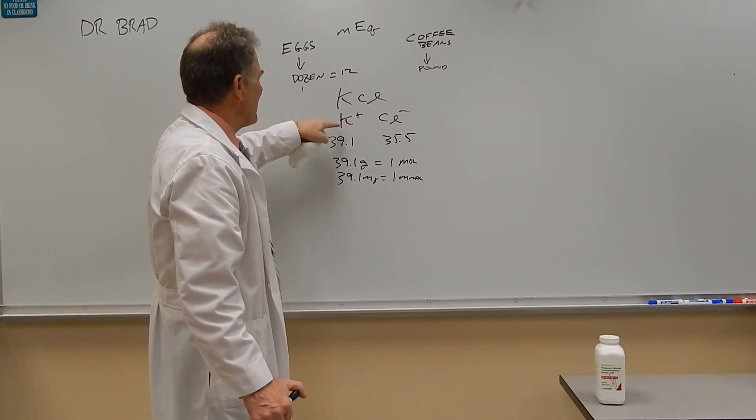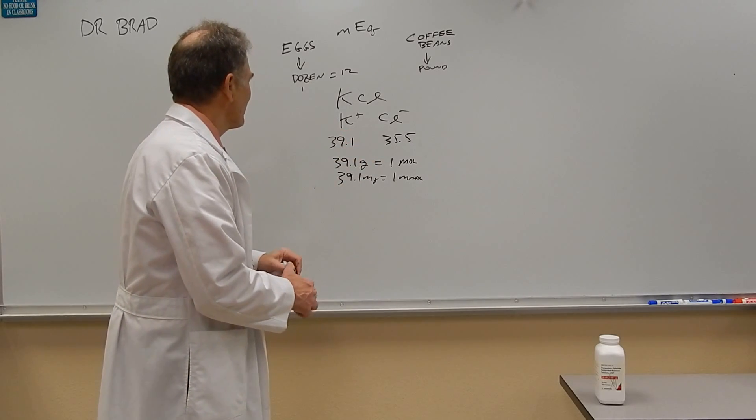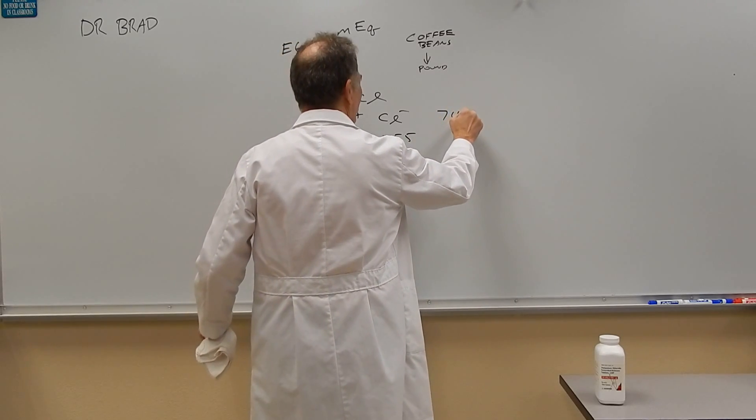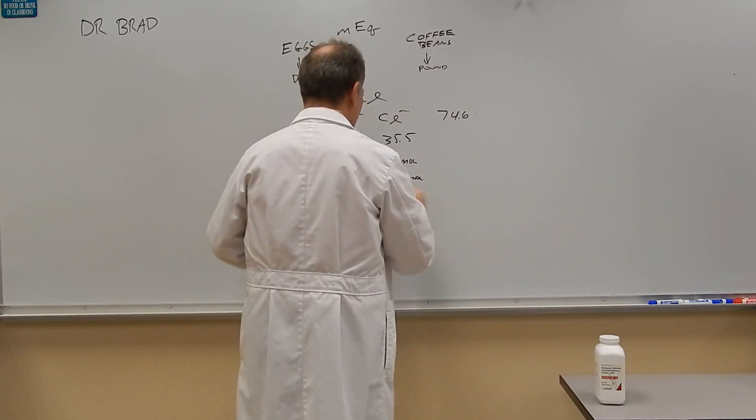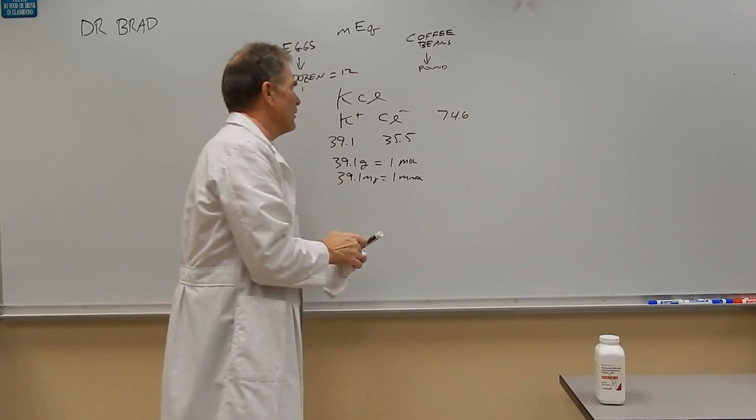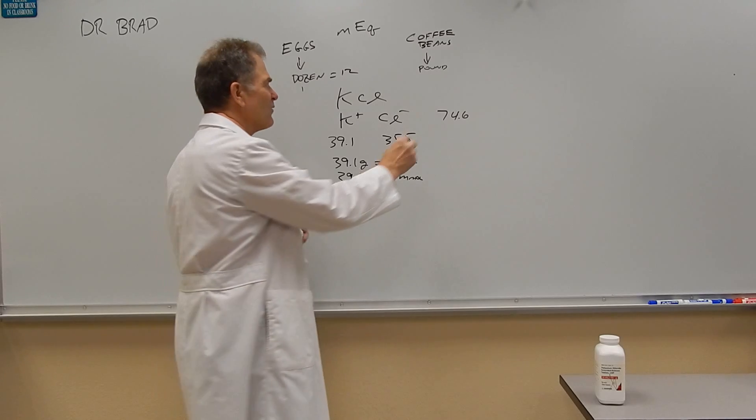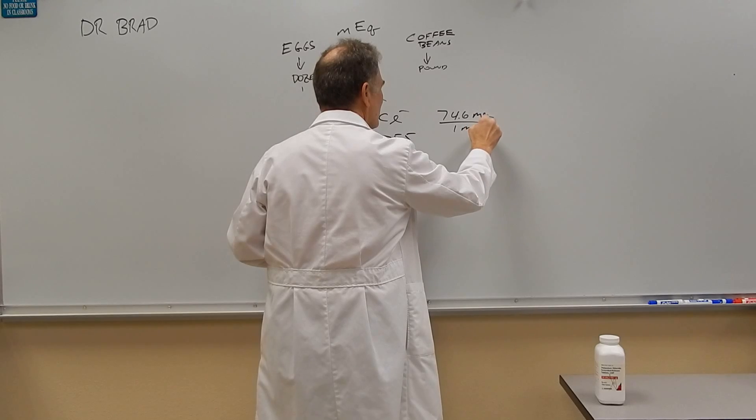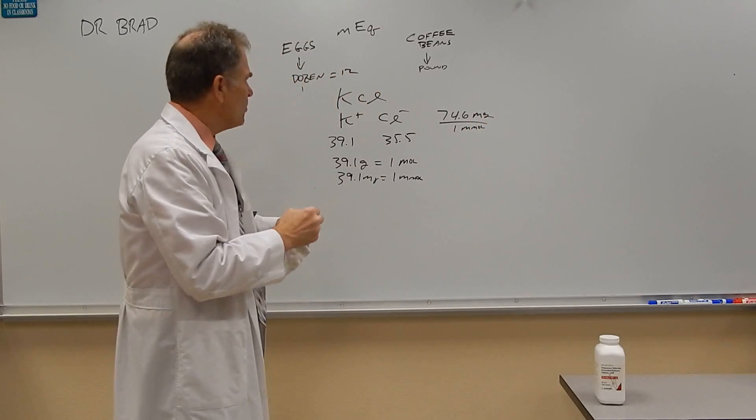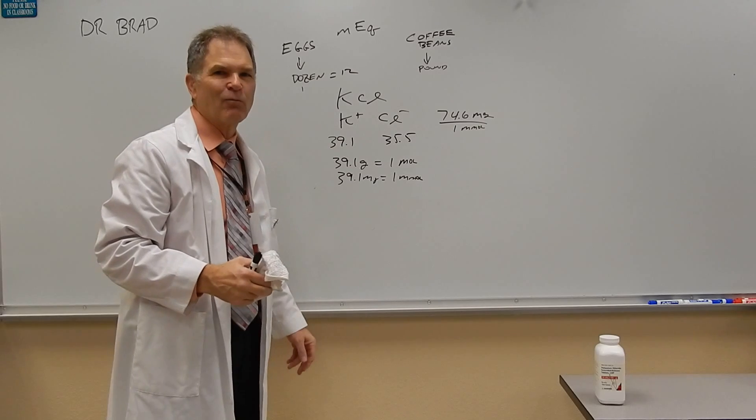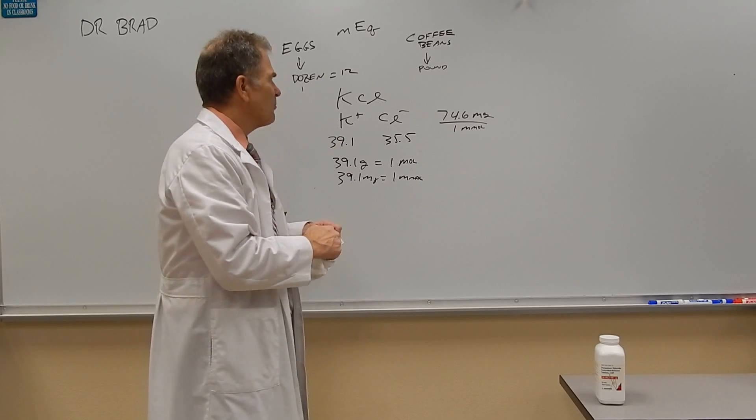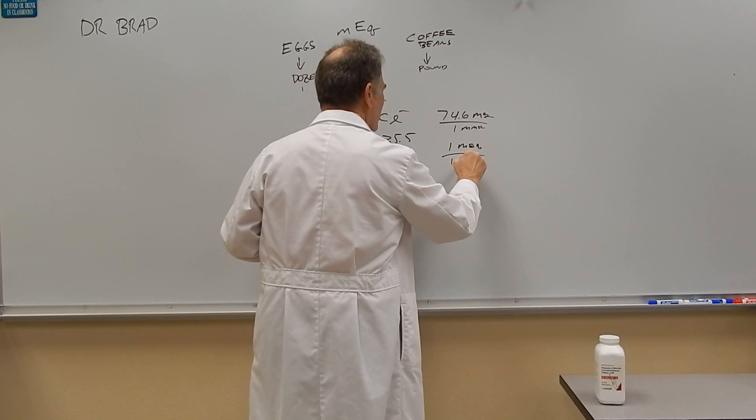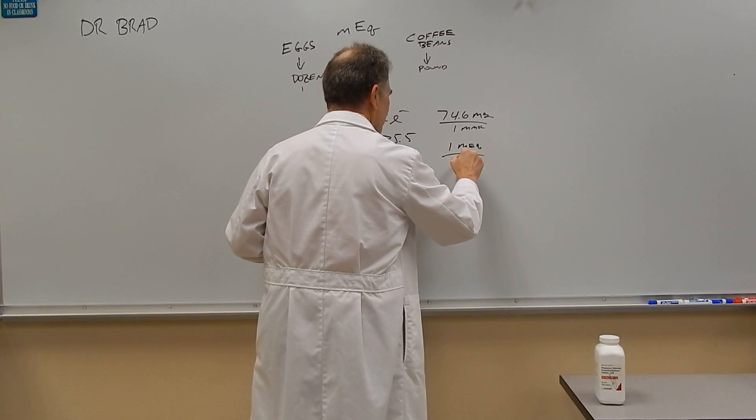So if you add the potassium and the chloride together, you're going to get 74.6 as the atomic mass of potassium chloride. So that means that there's 74.6 milligrams per one millimole. Now we also know that since potassium and chloride just have one charge each, there's going to be one milliequivalent per one millimole.